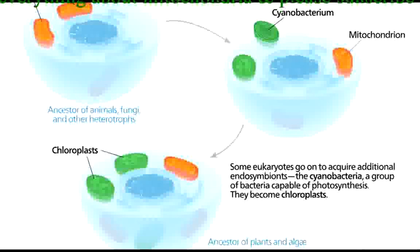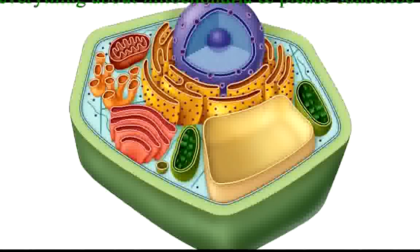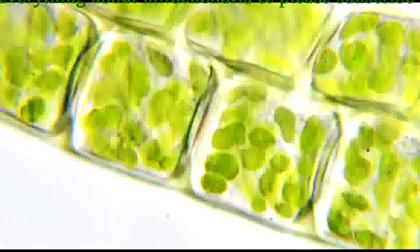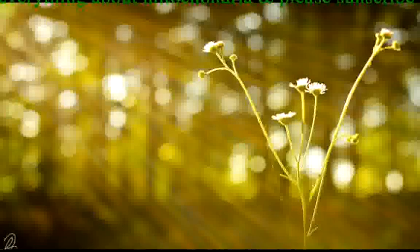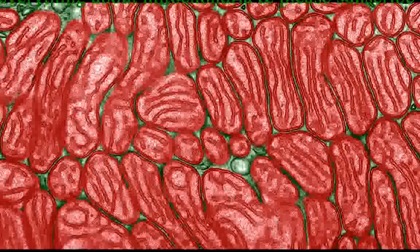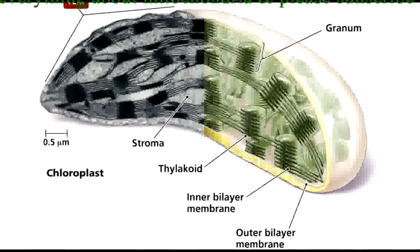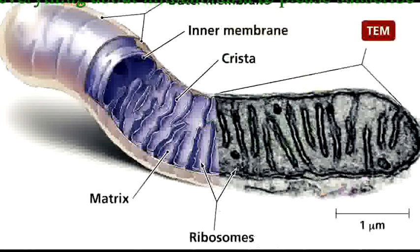This eukaryote was the ancestor of plants and algae. Thus, plant and algal cells contain both mitochondria and chloroplasts, while animal cells contain only mitochondria. Some students mistakenly associate chloroplasts only with plants and mitochondria only with animals, but this is not the case. While only plants and algae are capable of photosynthesis, animals, plants, and algae all carry out cellular respiration.